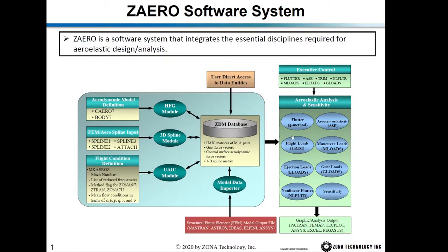For the engineering modules, ZAERO has a flutter module, an aeroservoelasticity module, a flight load module we call the trim module, a maneuver load module we call the M-load module, an ejection load module we call E-loads, a gust module we call G-loads, a nonlinear flutter module, and ZAERO can also perform sensitivity analysis.